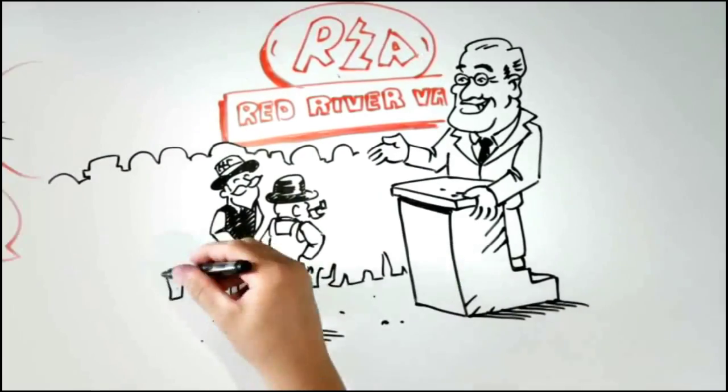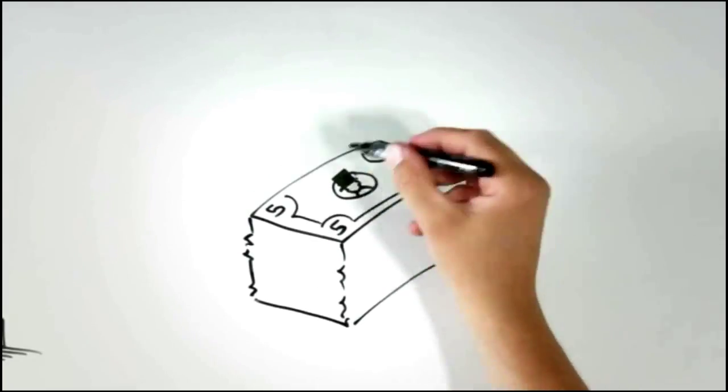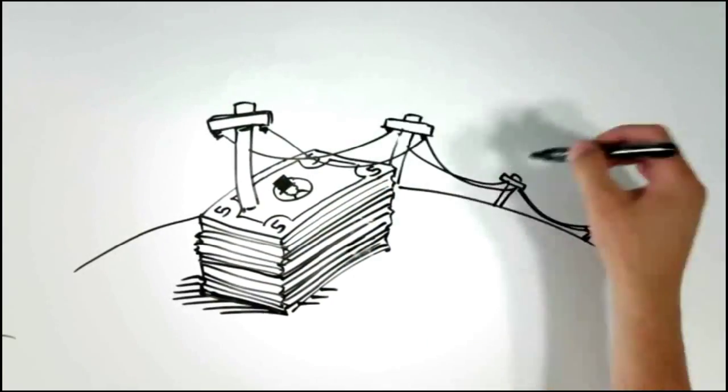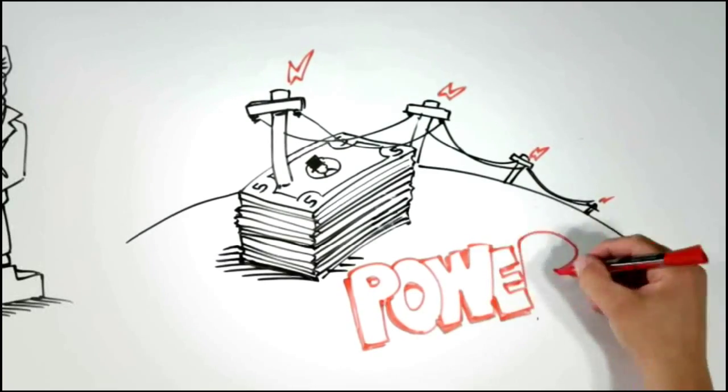And they did. Rural men and women quickly began scraping together the five dollars needed for membership and equity in the co-op. Up went the poles and wire and lines to bring rural folks what they so desperately needed: power.